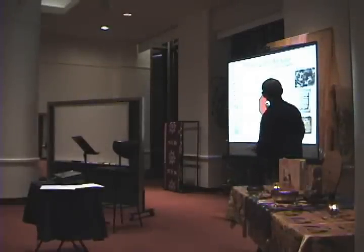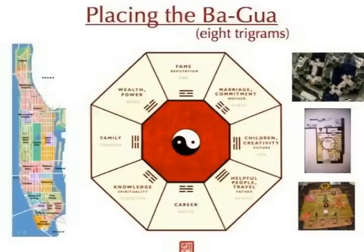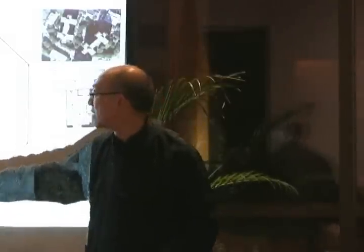Here is the Bagua — this is in your handout. 'Ba' means eight in Chinese, and 'gua' means trigrams. Each of the eight trigrams, represented by three lines, corresponds to different qualities or aspects of our life and space. There is a wealth and power area, a fame area, a marriage and relationship area, a children and future area, a helpful people and travel area, a career area, a knowledge area, and a family area.